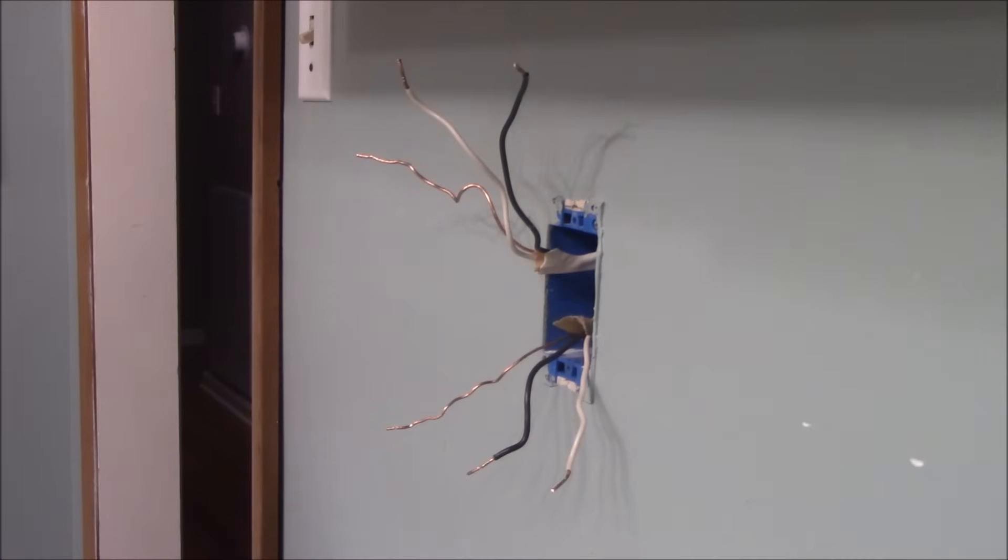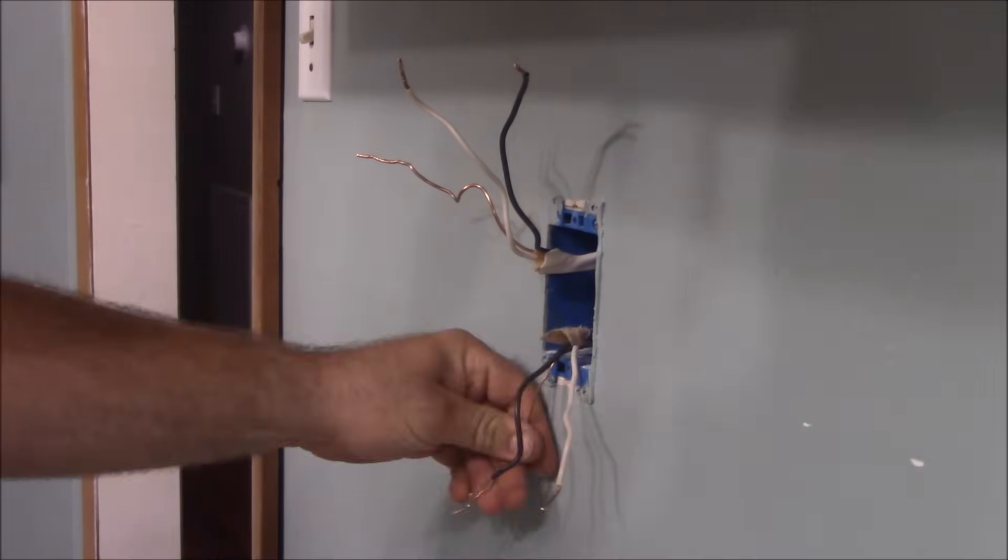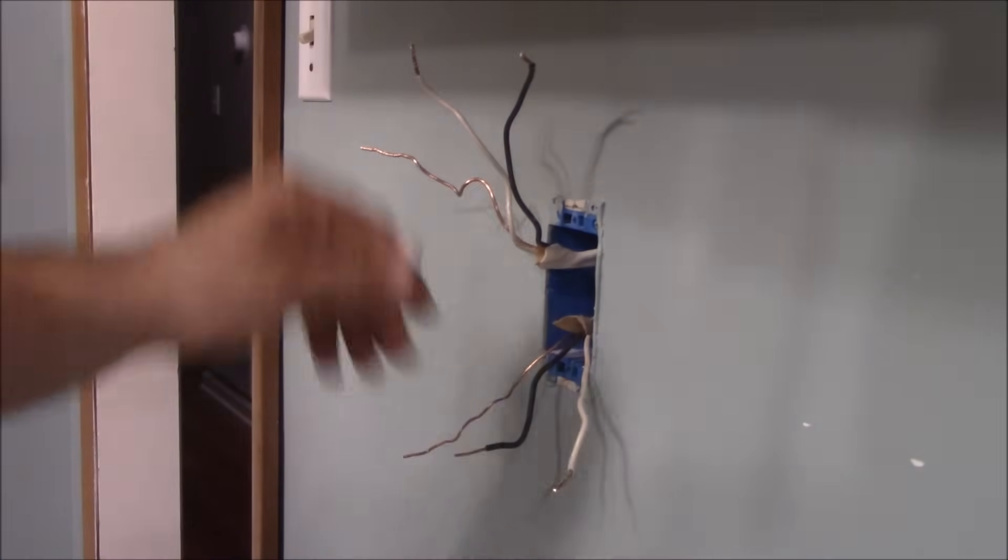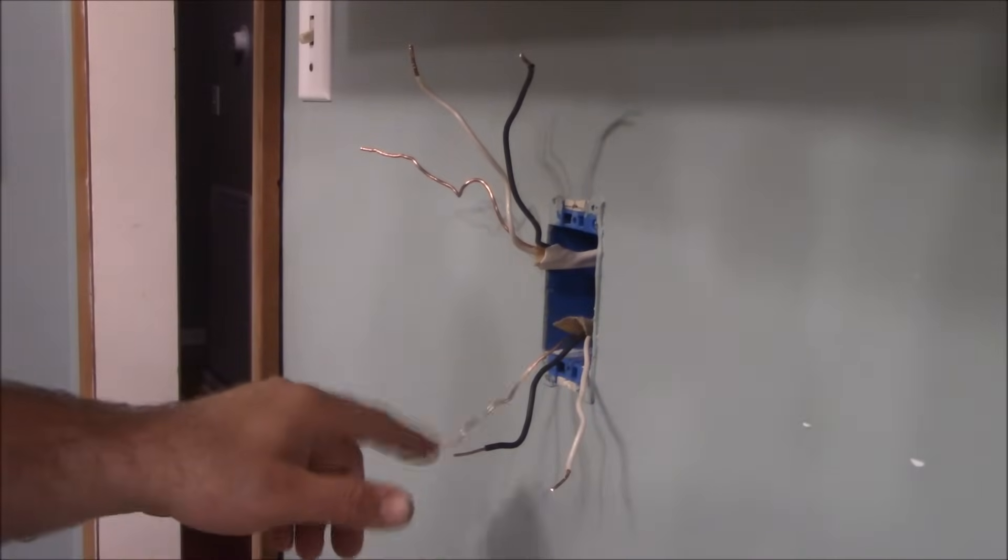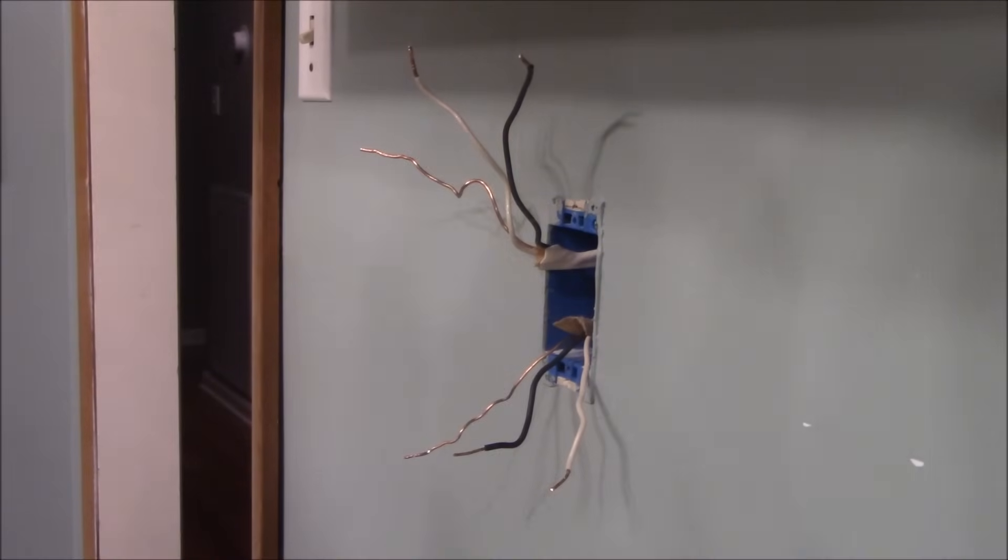I have two main wires coming into this junction box, so I need to go ahead and separate these like I have here. This one here has a white, black, and a ground, and so does the top here.